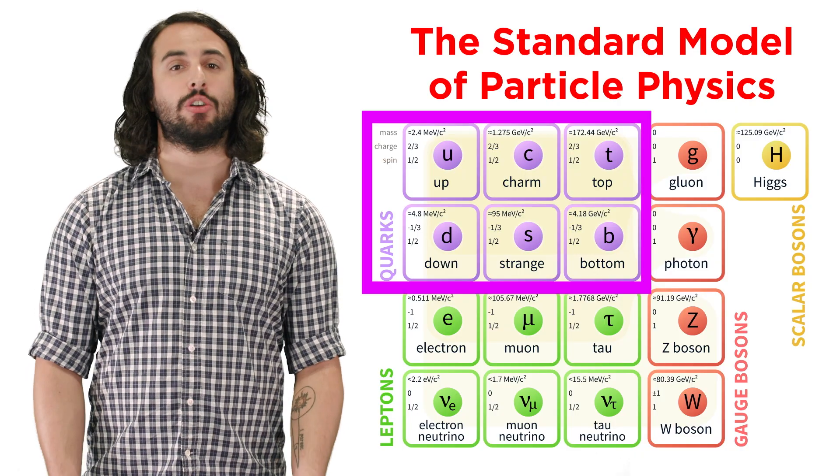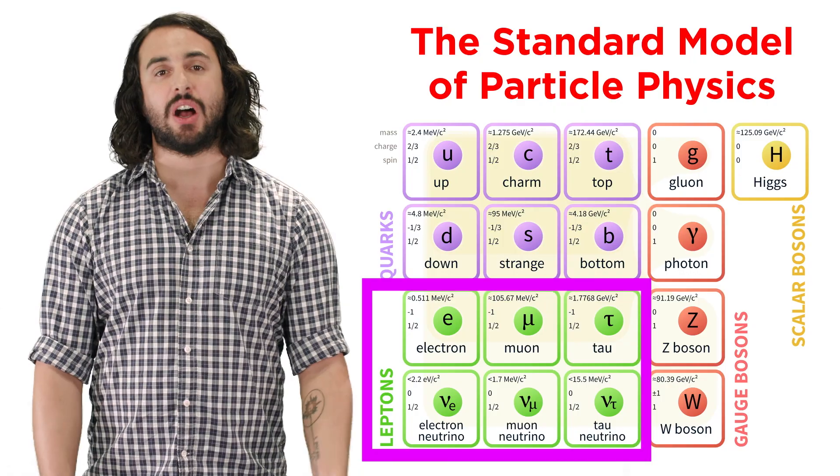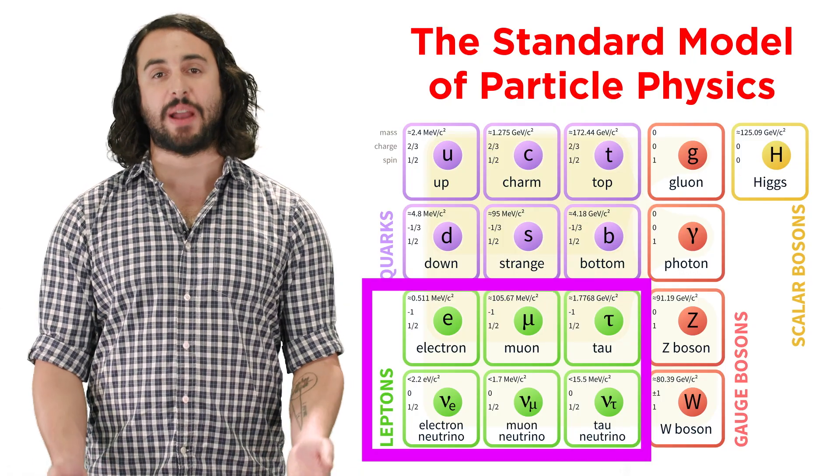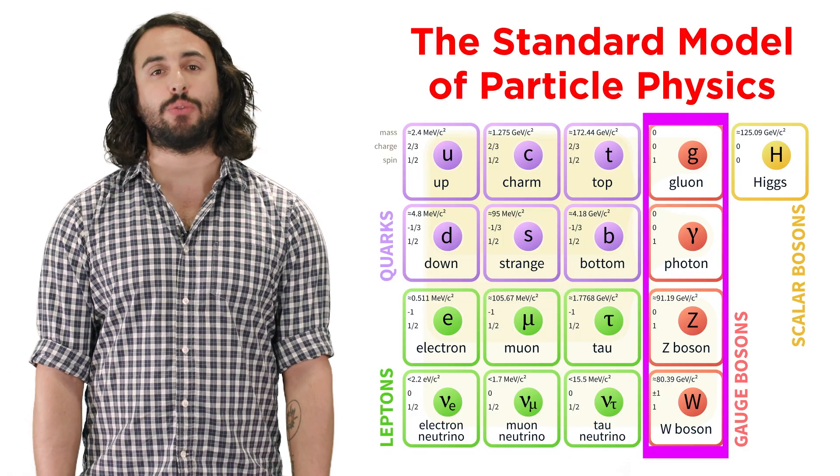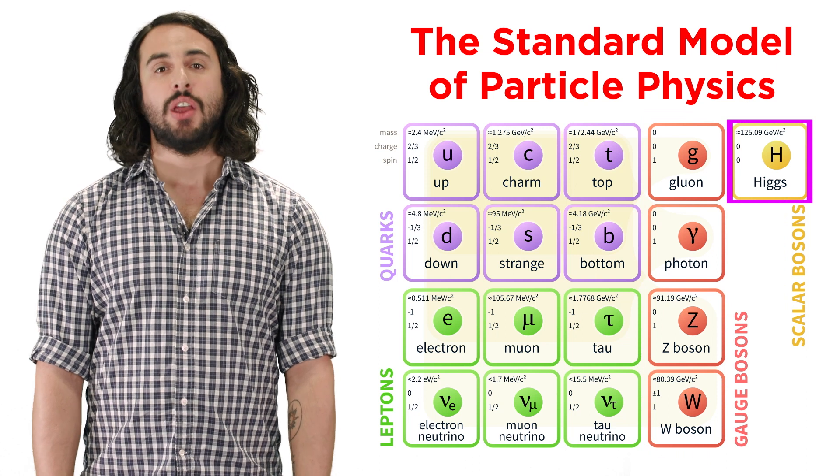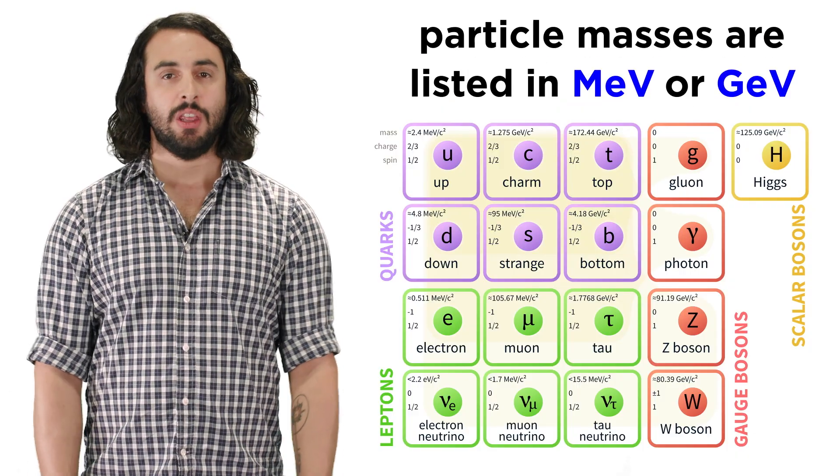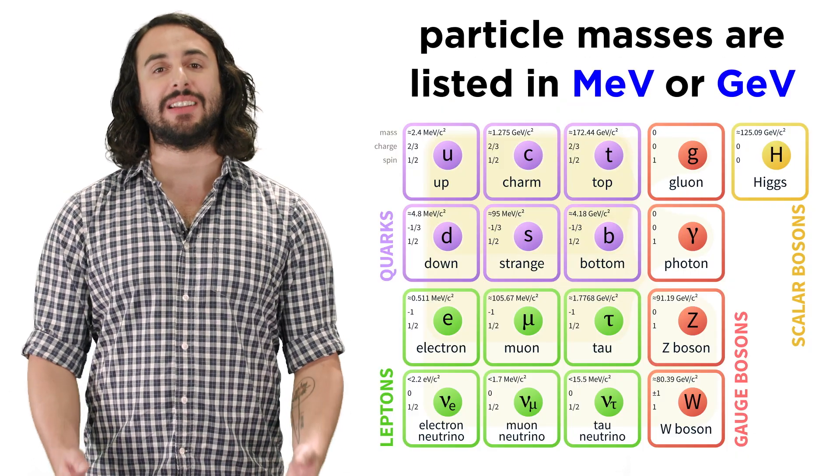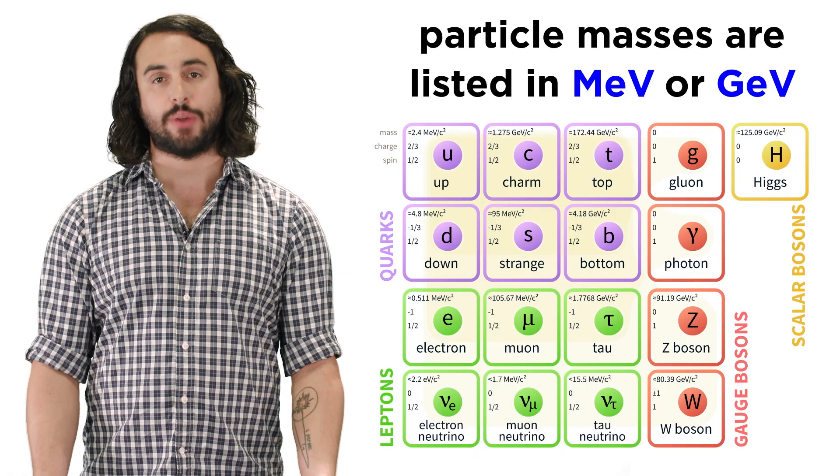So far that leaves us here. We can see the up, down, charm, strange, top, and bottom quarks. We see the leptons, including the electron, muon, tau, and their respective neutrinos. We see the gauge bosons that mediate the three forces we have quantum field theories for, and the Higgs boson, the particle that bestows massive particles with their mass. The rest masses of these particles are often listed in mega electron volts, a unit of energy due to mass-energy equivalence.